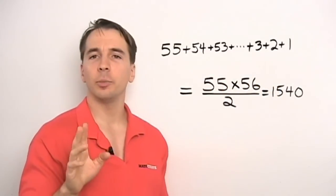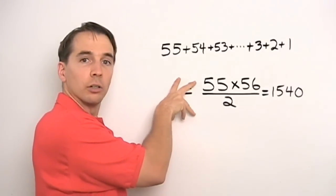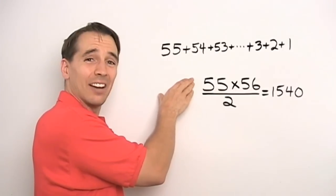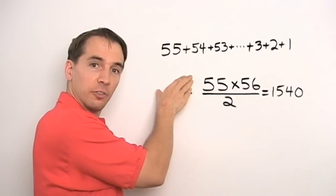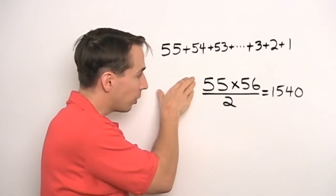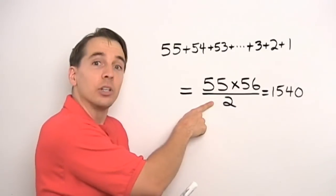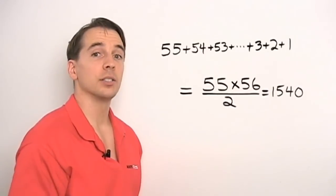Now this problem points out a couple very important counting principles. First of all is our strategy here, in our second solution. We overcounted by counting everything the same number of times. We counted everything twice. And then to fix that and get the right count, we divided by how many times we counted each high-five. We divided by two, and that allows us to count each high-five exactly once.